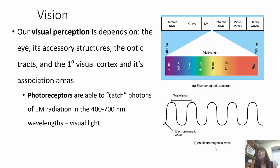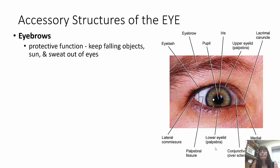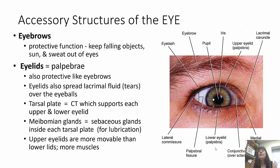You might remember ROYGBIV — that's how you remember how the wavelengths go. The wavelengths are usually anywhere from 400 to 700 nanometers, and this is the visible light spectrum. Now we're going to start with the accessory structures of the eye.